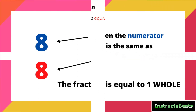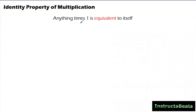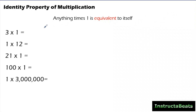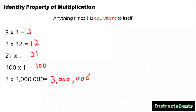We need to understand something else today: the identity property of multiplication. Any number times 1 is equal to itself. The multiplication sign means groups of — repeated addition. So if you have one group of four cookies, you have four cookies. Any time you multiply a number times 1, you get itself. Using that: 3 times 1 is 3, one group of 12 is 12, 21 times 1 is 21, 100 times 1 is 100, 1 times 3 million is 3 million. Anything times 1 is itself.